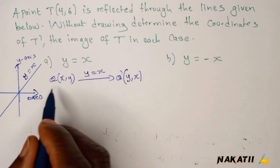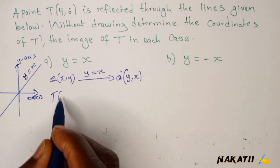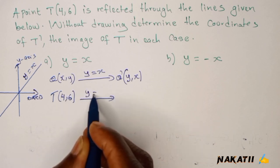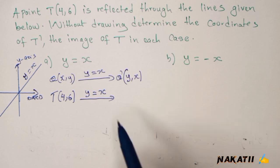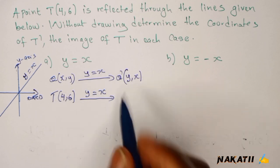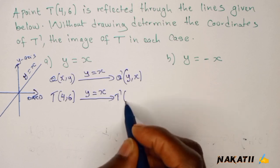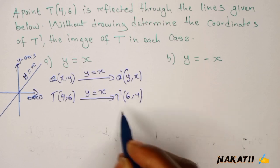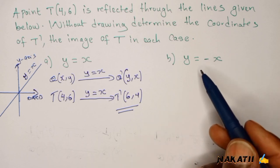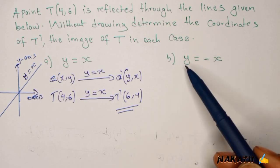In our case here, if you're told to reflect T which is (4,6) on line y equals x, what you just do is interchange the y and the x coordinates, so we're going to have our T' will be (6,4), and that will be your answer.